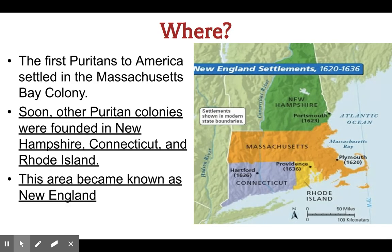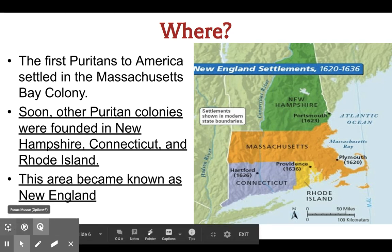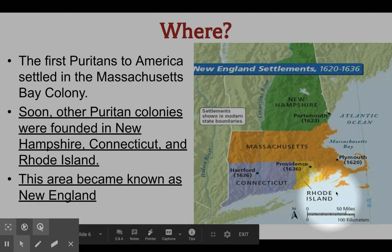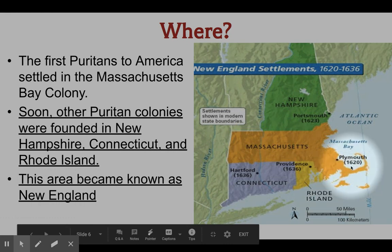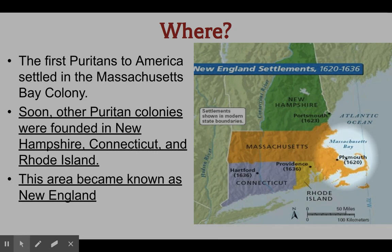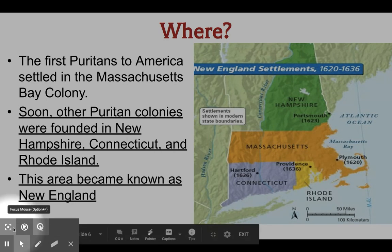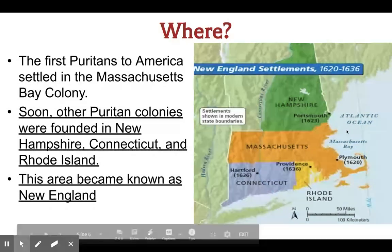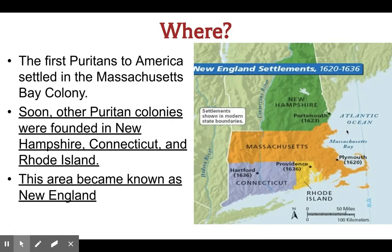The Puritans moved into Massachusetts Bay. If you look at the map, you can see Plymouth and Massachusetts Bay — it's an isolated area that provides a pretty safe harbor, a good place to park your boats. Soon other Puritan colonies were founded nearby, and once there was a successful colony it provided a base for others, and this area became known as New England.